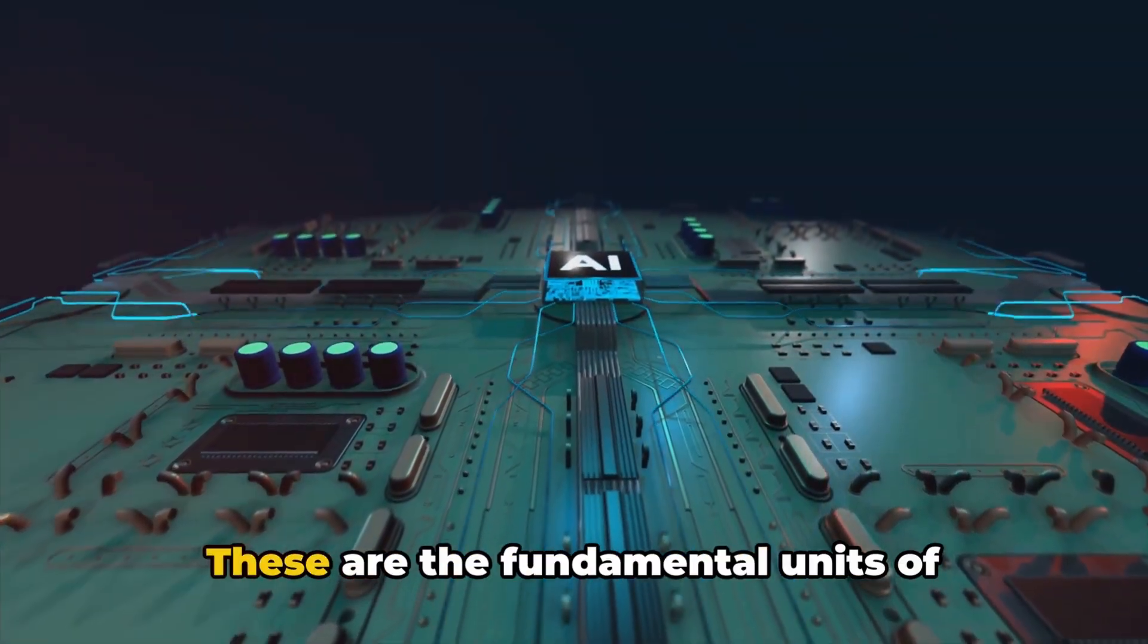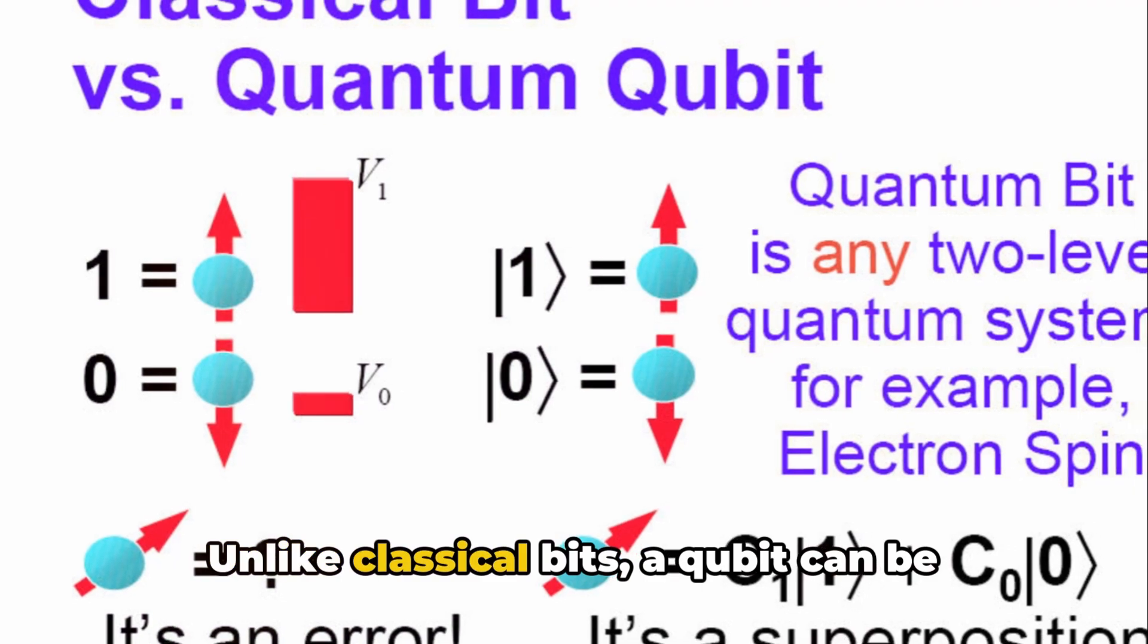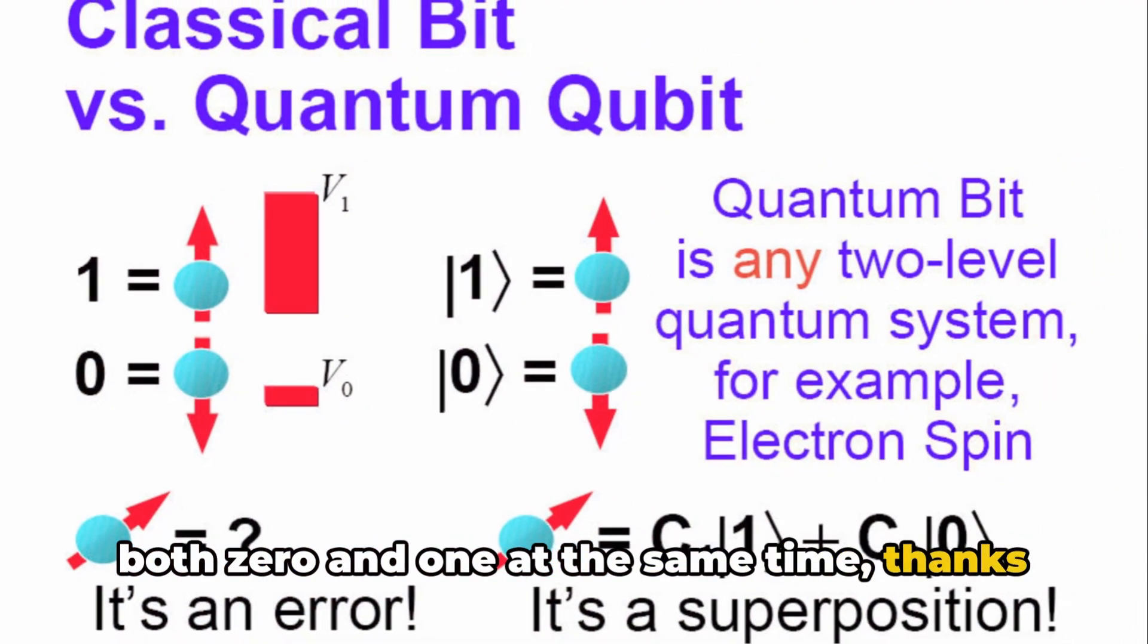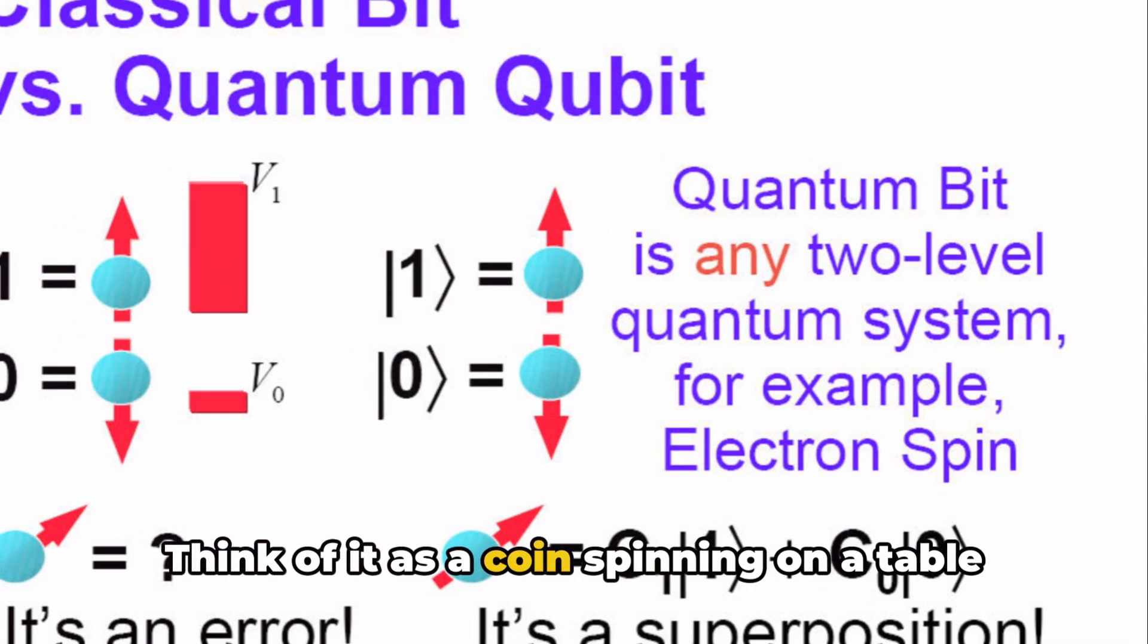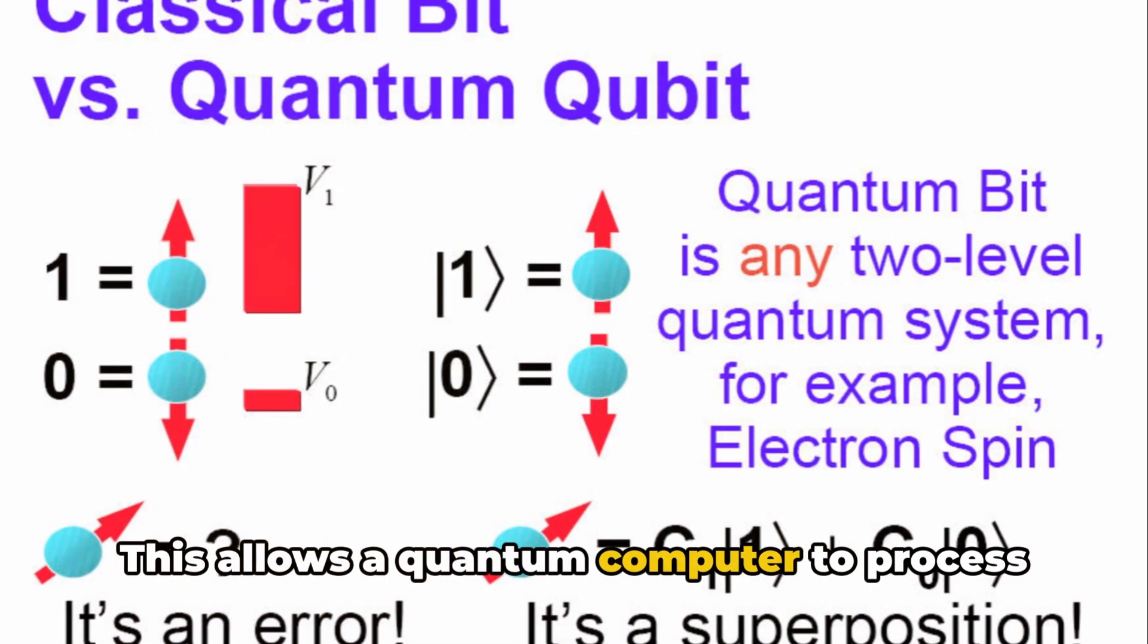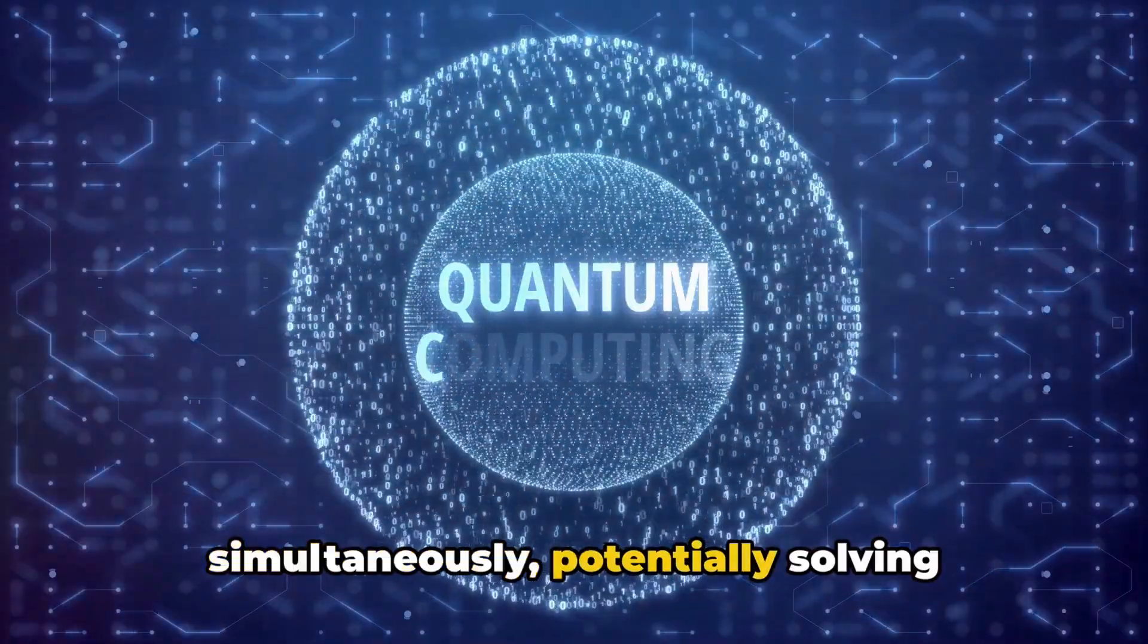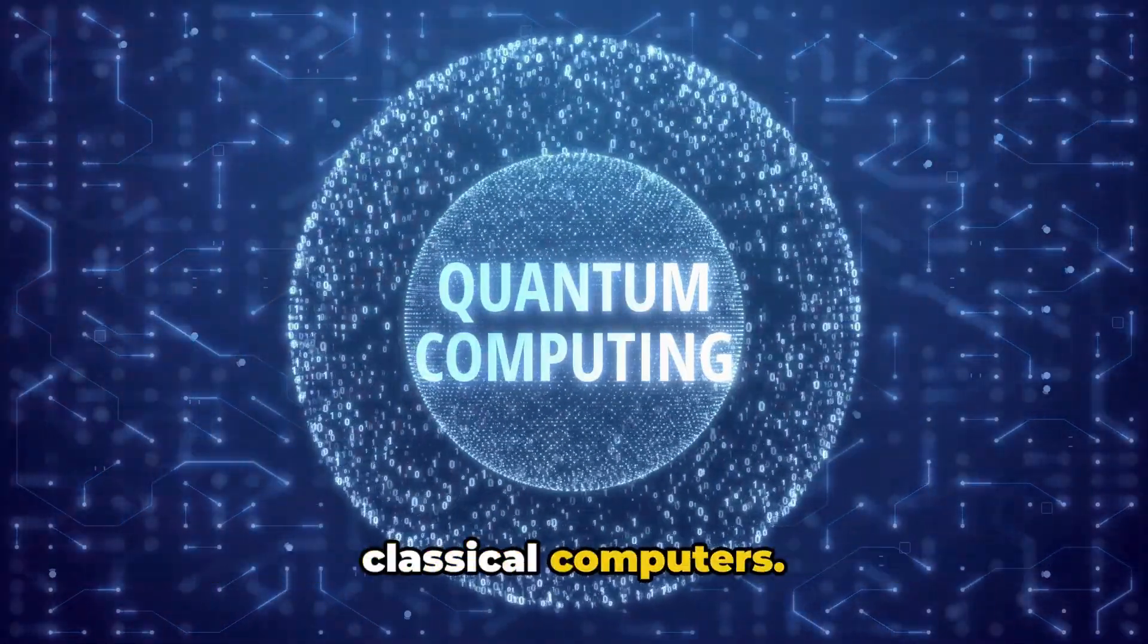Enter quantum bits, or qubits. These are the fundamental units of quantum computing. Unlike classical bits, a qubit can be both zero and one at the same time, thanks to a principle called superposition. Think of it as a coin spinning on a table. Until it lands, it's in a state of being both heads and tails. This allows a quantum computer to process a vast number of possibilities simultaneously, potentially solving complex problems far more efficiently than classical computers.